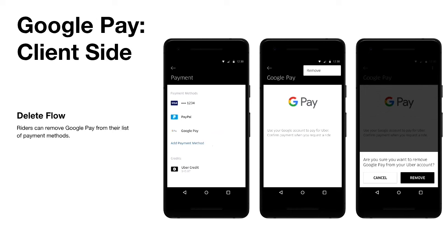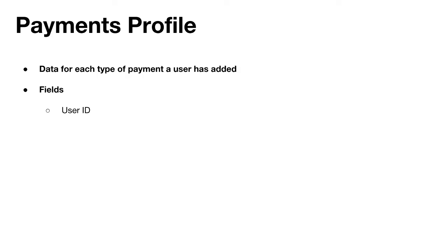Now I'll talk about the backend. Before I do, hands up if you've ever heard of the concept of a payment profile in any shape or form. At Uber, we don't just have Google Pay — we have credit cards, Venmo, Paytm, bank accounts, all these different methods. Inside our system, we represent these all as payment profiles. When you add something like this, we just add a payment profile. Each payment profile has some common fields across all types — like your Uber user ID and a type field indicating Google Pay or PayPal — and then custom fields per type. For credit cards, we'd store the last four digits, for example.